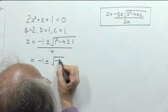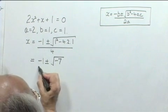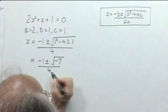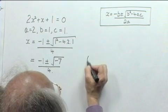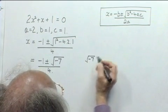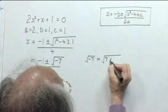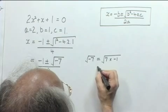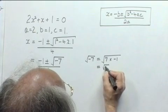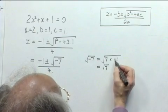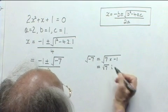Now the square root of minus 7 we handle in the same way as before. We write it as the square root of 7 times minus 1. The square root of 7 we leave as the square root of 7, and the square root of minus 1 we now write as i.